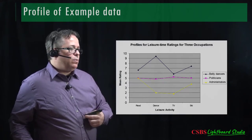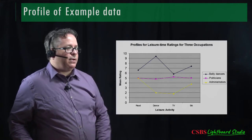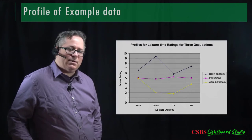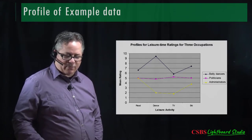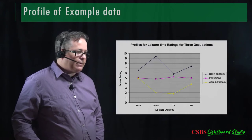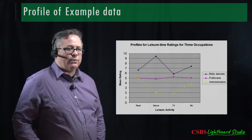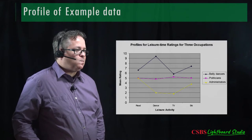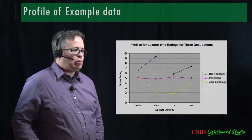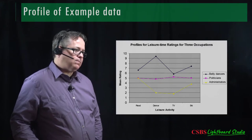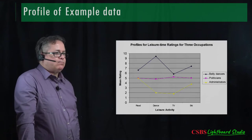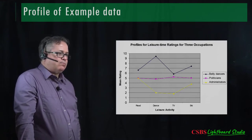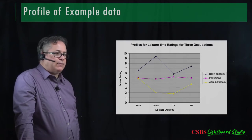Christopher, tell me one of the three profile analysis hypotheses you think might be rejected based on this graph. You have equal levels, parallel profiles, and flatness. We think we're going to have a significant equal levels test.